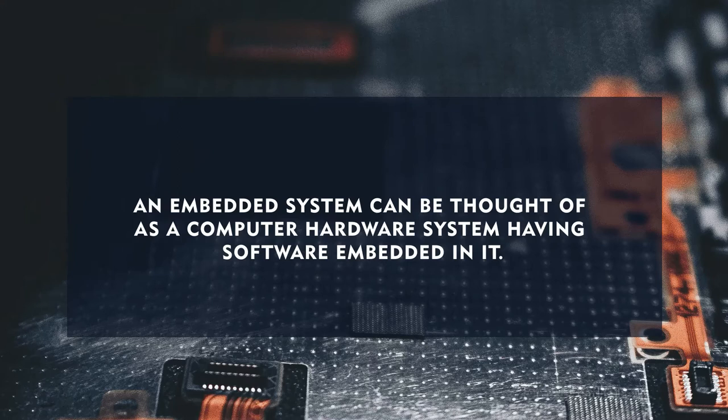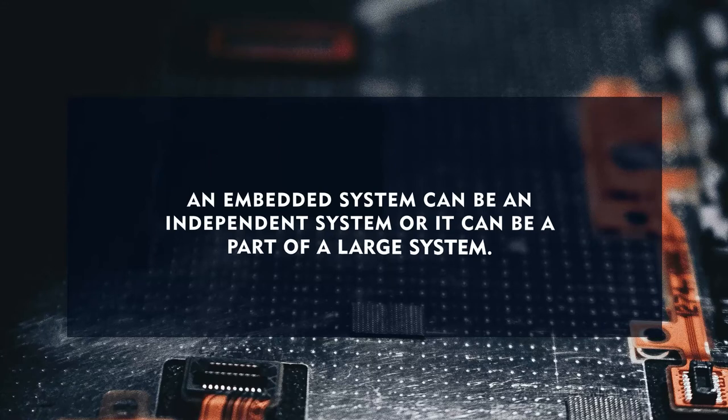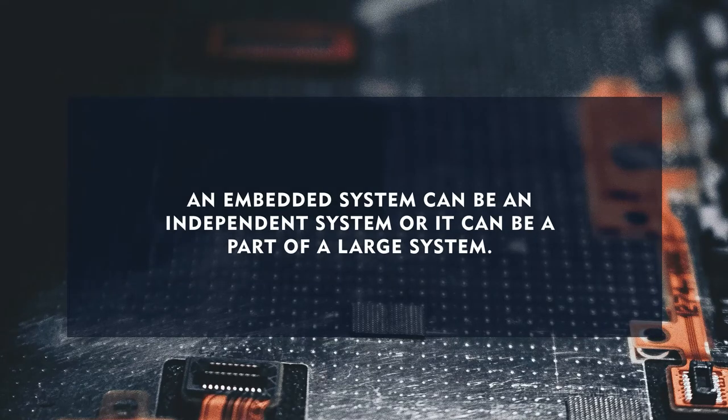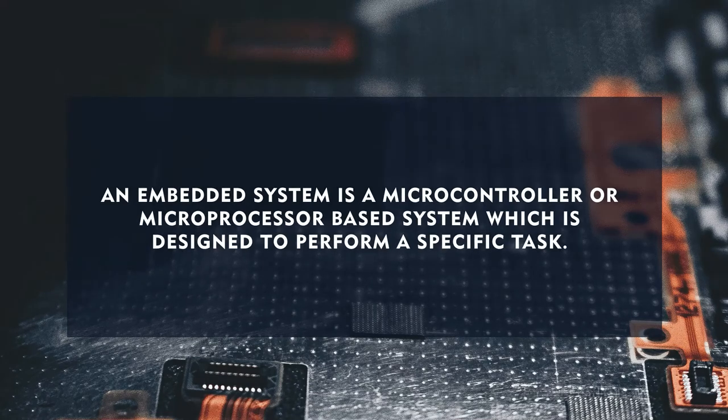You can define the embedded system in many ways. In many textbooks there are several definitions, but ultimately the underlying thing is that it is a chip and the programs residing in the chip. An embedded system can be thought of as a computer hardware system having software embedded in it. It can be an independent system or part of a large system. It is a microcontroller or microprocessor-based system designed to perform a specific function. Nowadays, the cars we use come with embedded chips — not only one particular system but several systems, each looking after individual specific functions.